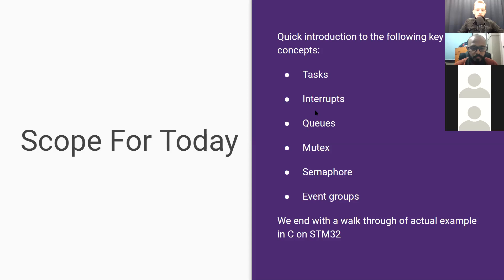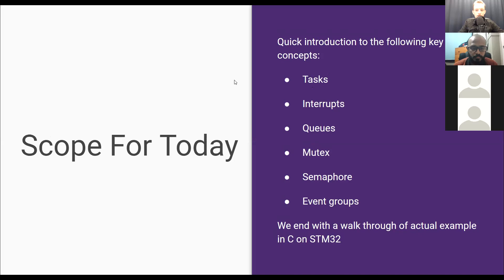The scope for today is a quick introduction to tasks, interrupts, queues, mutexes, semaphores, and event groups. Each one of these fills a particular function in programming on top of RTOS and solves particular problems that you have when you need to synchronize different tasks together. We'll end this presentation with an actual example in C on STM32.